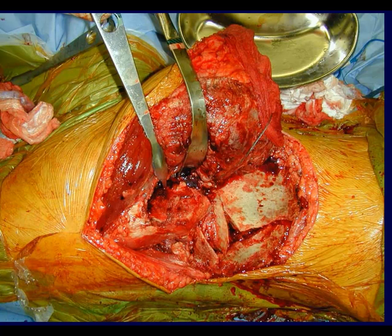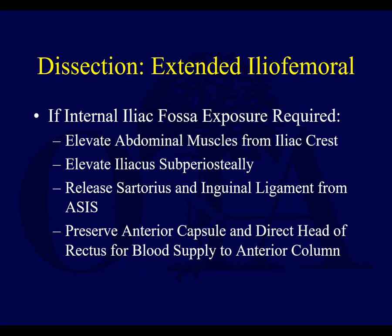If internal iliac fossa exposure is required, you do this like you do for a lateral window — elevate the abdominal muscles from the iliac crest and elevate the iliacus subperiosteally. Release the sartorius and inguinal ligament from the ASIS, which is not something you have to do for the ilioinguinal but gives additional anterior exposure of the anterior wall of the acetabulum. You can preserve the anterior capsule and direct head of the rectus femoris for blood supply to the anterior column.